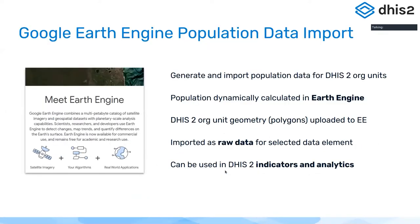Okay, so continuing on the geo theme, we also have a very exciting new solution for importing dynamically generated population data straight into DHIS2. This is a new solution built on top of the Google Earth Engine. We have been supporting Google Earth Engine for quite a while — it's essentially a vast catalog of geospatial data made available by Google. So in 2.39, we can now basically generate and import population data dynamically for DHIS2 org units.